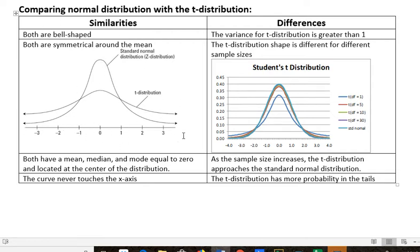So those are all things that are the same between a T distribution and a Z distribution. But a T distribution has a variance that's greater than one. And the T distribution shape is different for different sample sizes. T distribution is actually a series of different curves, whereas the normal distribution is one curve.